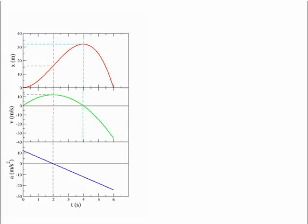Now, we can use these motion curves to draw what are known as motion diagrams. A motion diagram shows the position of a particle at various times during the motion. So by looking at the graphs on the left-hand side, we are going to now draw motion diagrams on the right-hand side.